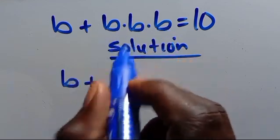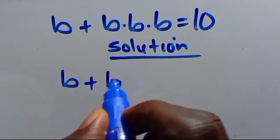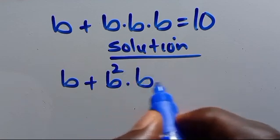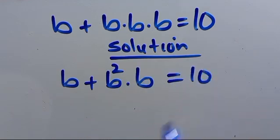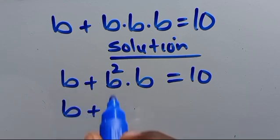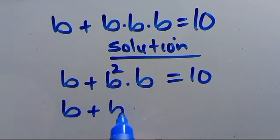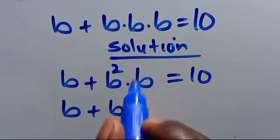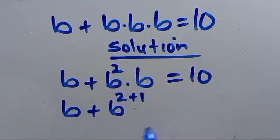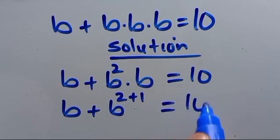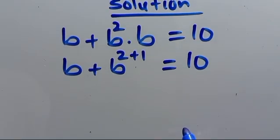B times B will give us B squared, times B equals 10. So from here we have B times B squared, which will be B to the power of 1 times B to the power of 2, plus 1, and everything equals 10 from the law of indices.